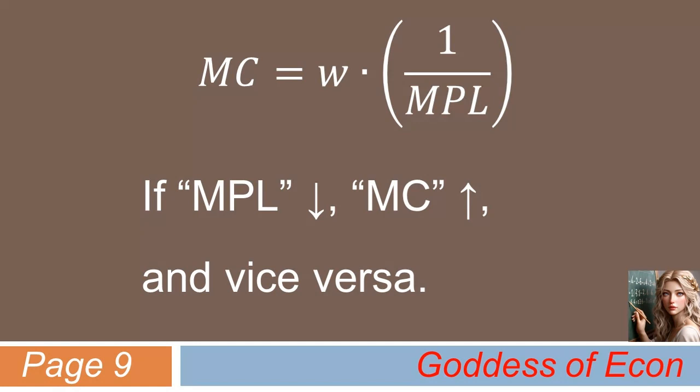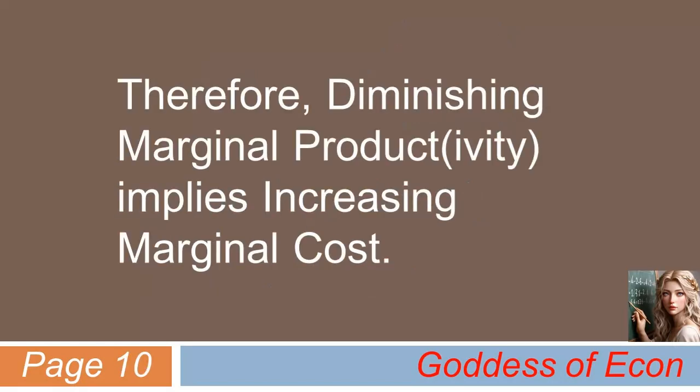So, we can conclude that under normal circumstances diminishing marginal product or productivity implies increasing marginal cost. This is a very important concept in production theory and is also very closely related to the properties of supply curve. So, you'd better not forget what you've learned in today's lecture given by the goddess of econ.